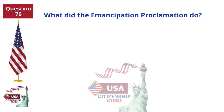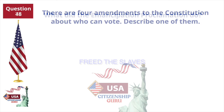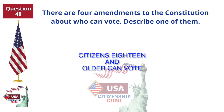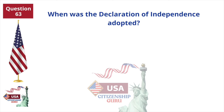What did the Emancipation Proclamation do? There are four amendments to the Constitution about who can vote. Describe one of them. When was the Declaration of Independence adopted?